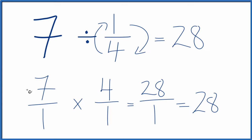So to recap, we took 7, we put it over 1 to give a fraction, and we multiply it by the reciprocal here of 1 fourth. That's 4 over 1. We got 28 over 1, which we simplified to just 28.